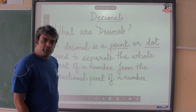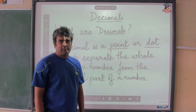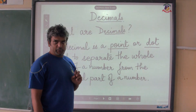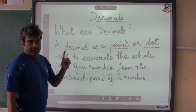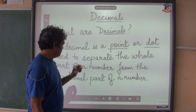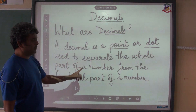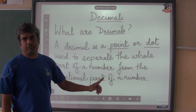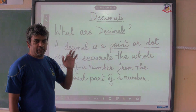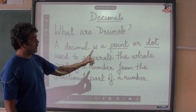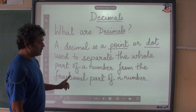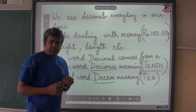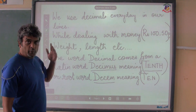Today we're going to start a new chapter in maths — decimals. Before we go ahead, we must understand what decimals are. A decimal is a point or a dot used to separate the whole part of a number from the fractional part of a number.